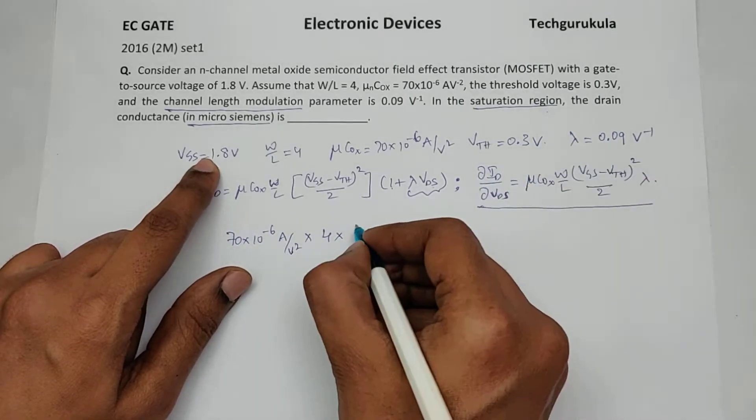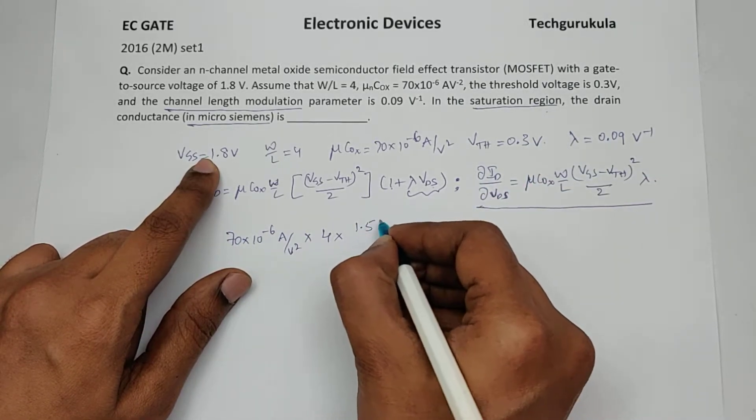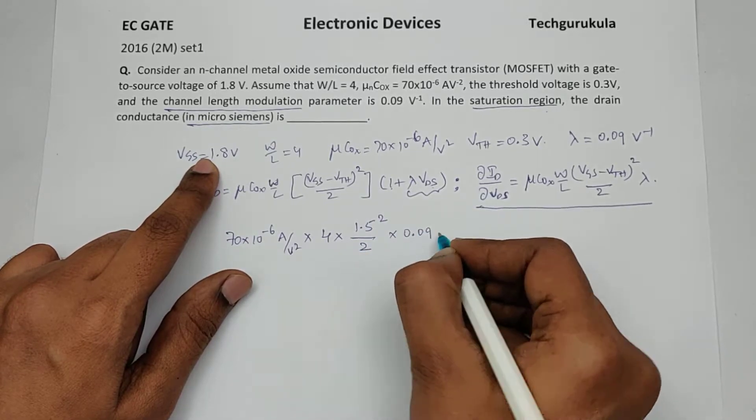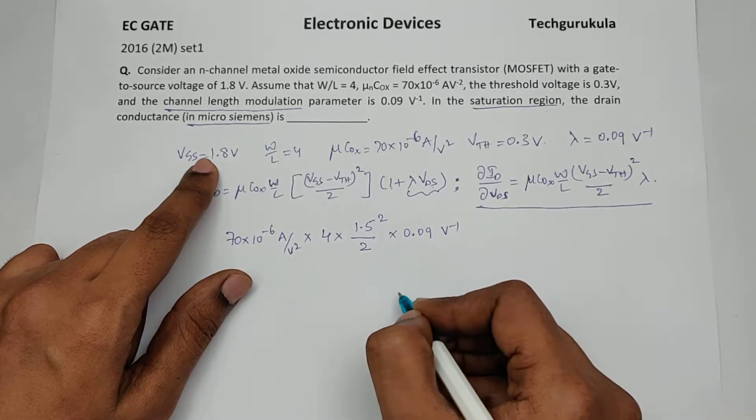VGS is 1.8, VTH is 0.3, this will become 1.5 square, divided by 2 times 0.09 volt inverse.